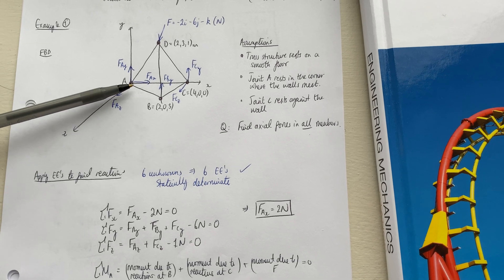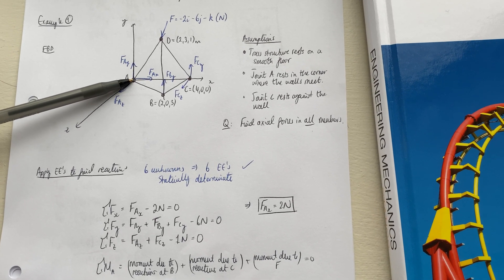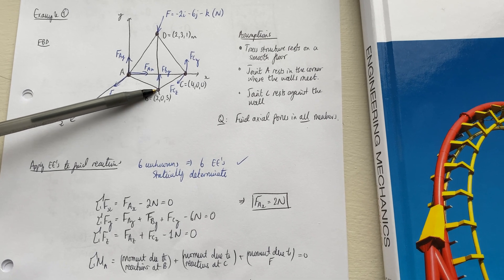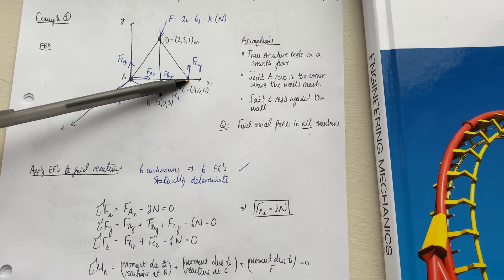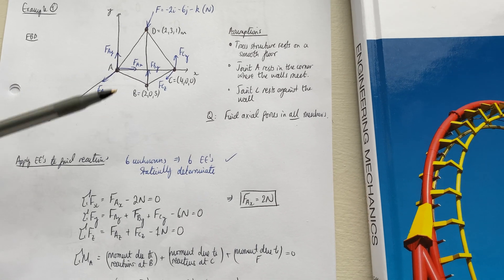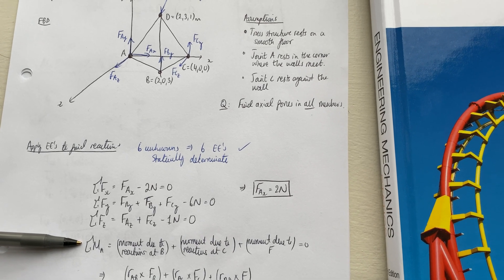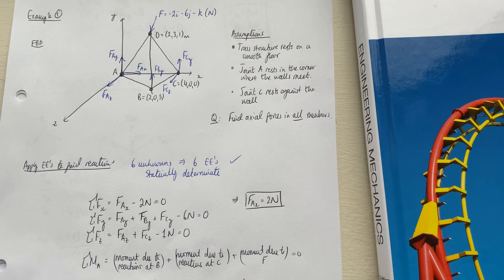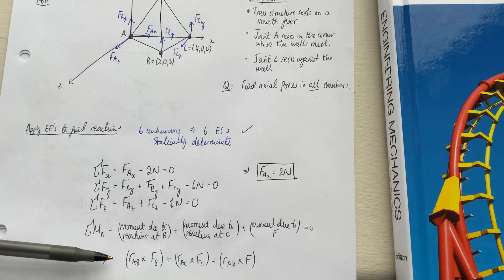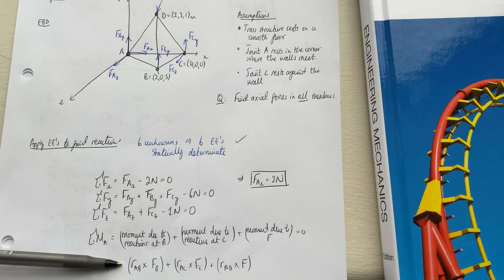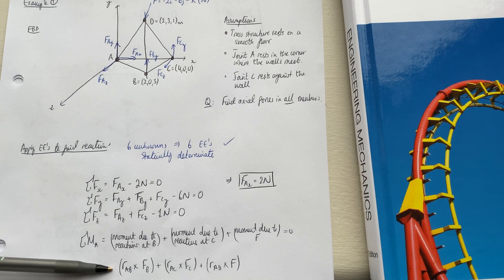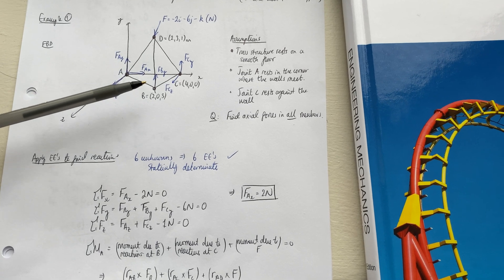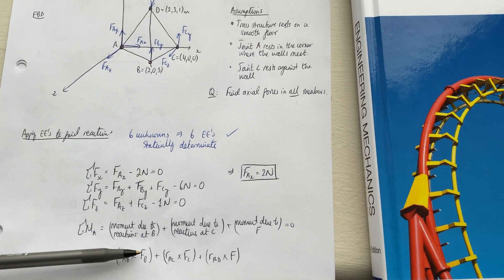We now resolve moments about point A, because this eliminates the three reaction forces at A. We have to consider moments due to the reaction at B, moments due to the reaction at C, and moments due to the force applied at D. Our moment equation will have three components, giving us three cross products to solve — namely the position vectors from A to each point crossed with the corresponding force vectors.